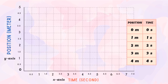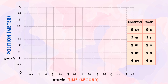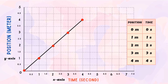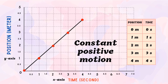We plot the values as points on the graph. The first point is at 0 meter and 0 second, then 1 meter and 1 second, then 2 meters and 2 seconds, then 3 meters and 3 seconds, and finally 4 meters and 4 seconds. We then draw a straight line through the points. The position-time graph shows a straight diagonal line, which means the motion of the man is constant rightward, meaning the velocity is positive 1 meter per second.